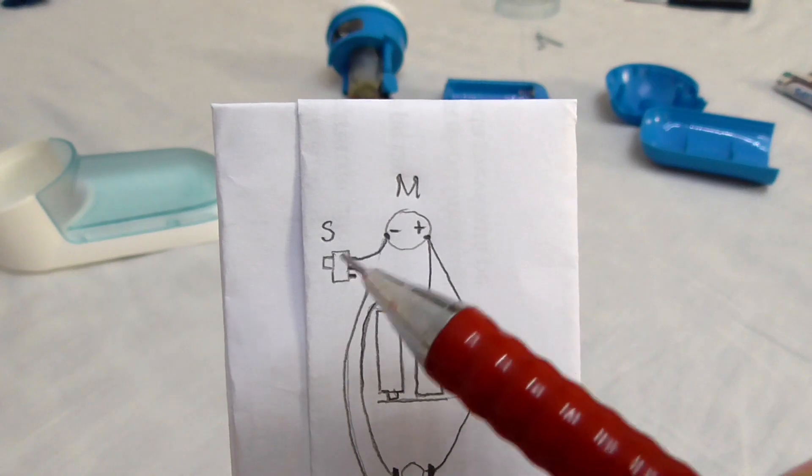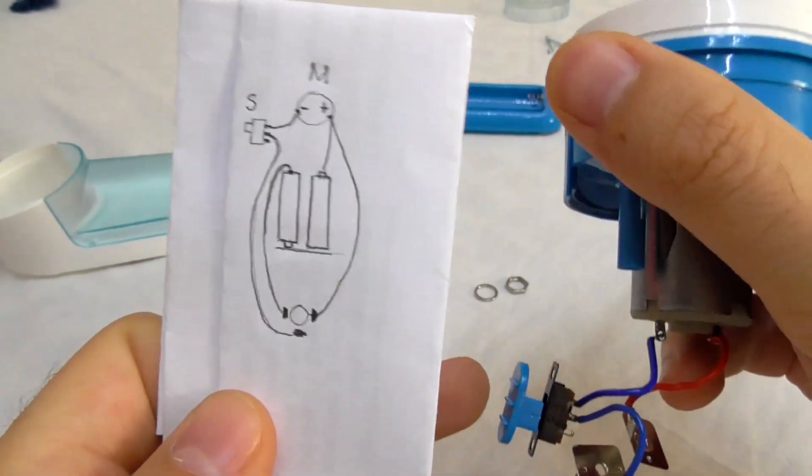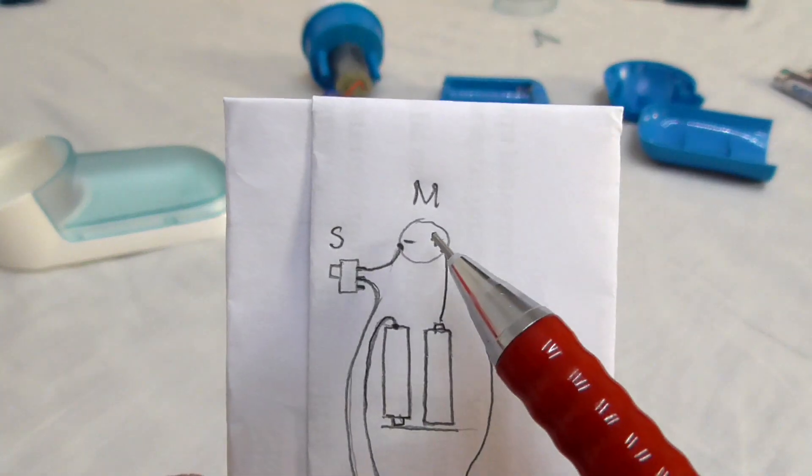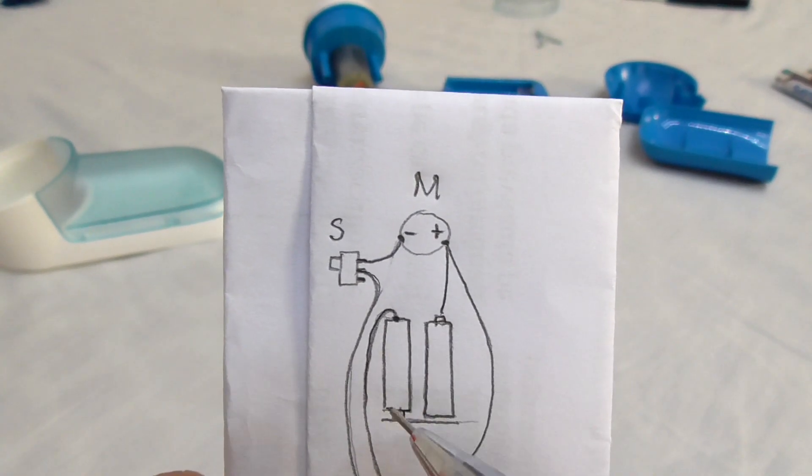That is the switch, which is this one. It's just interrupting the power. So motor, switch, and the two batteries.